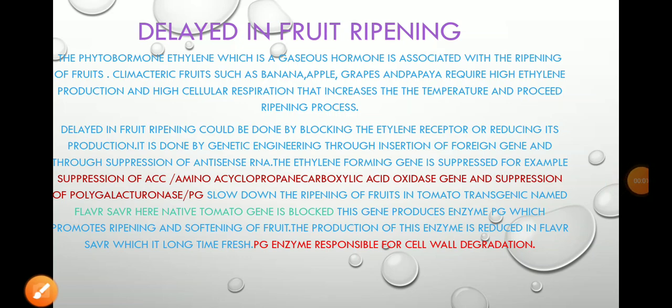One of the attributes of transgenic plants is delayed fruit ripening. The ripening process of fruit is a physiological process in the lifetime of a plant, and it is a multi-step process. Importantly, the ripening of fruit is under the control of genes.